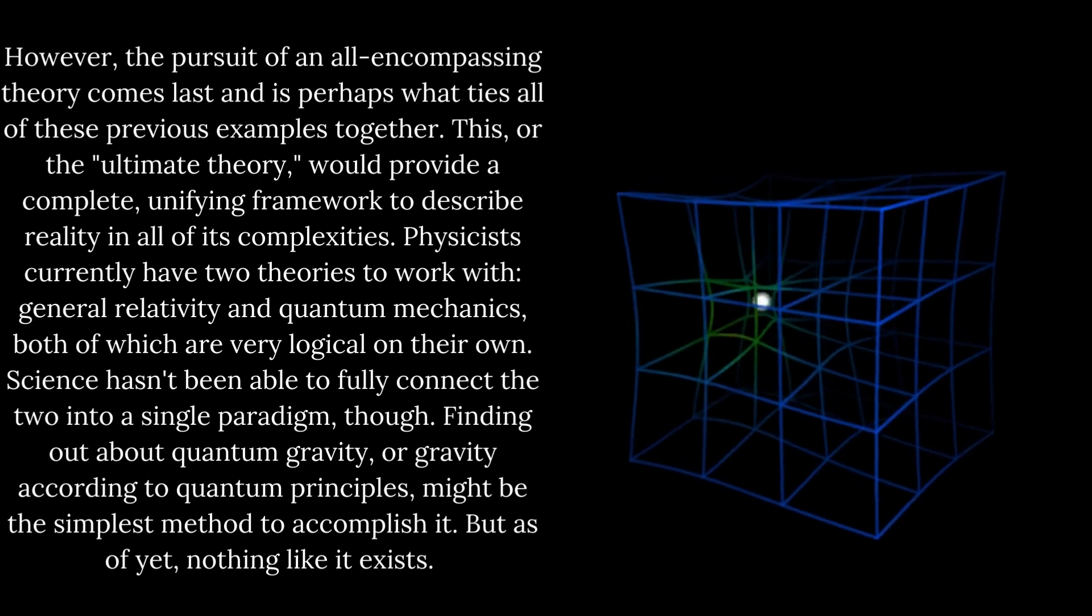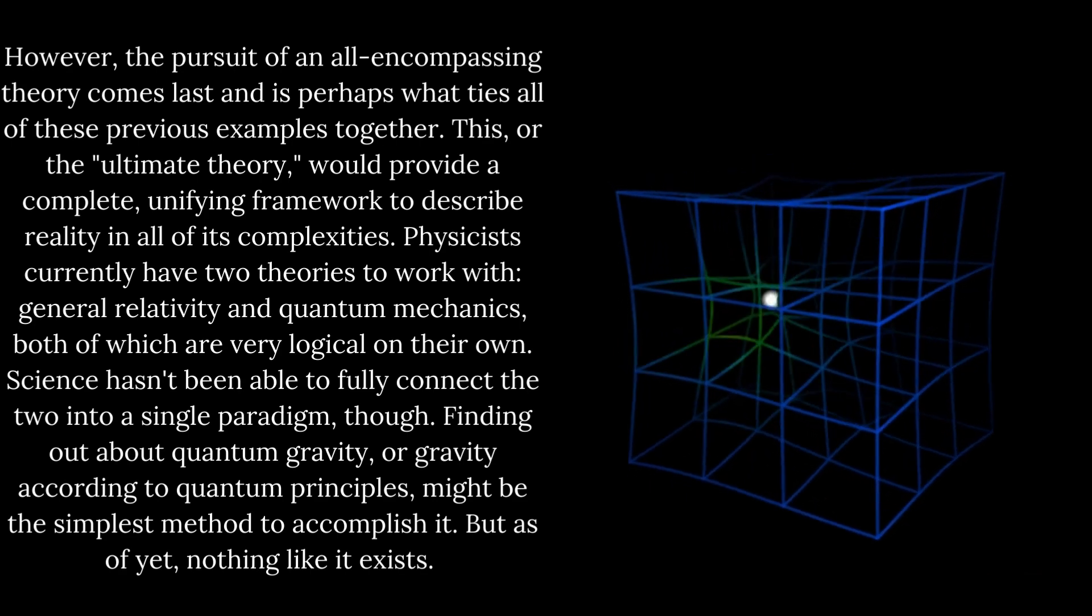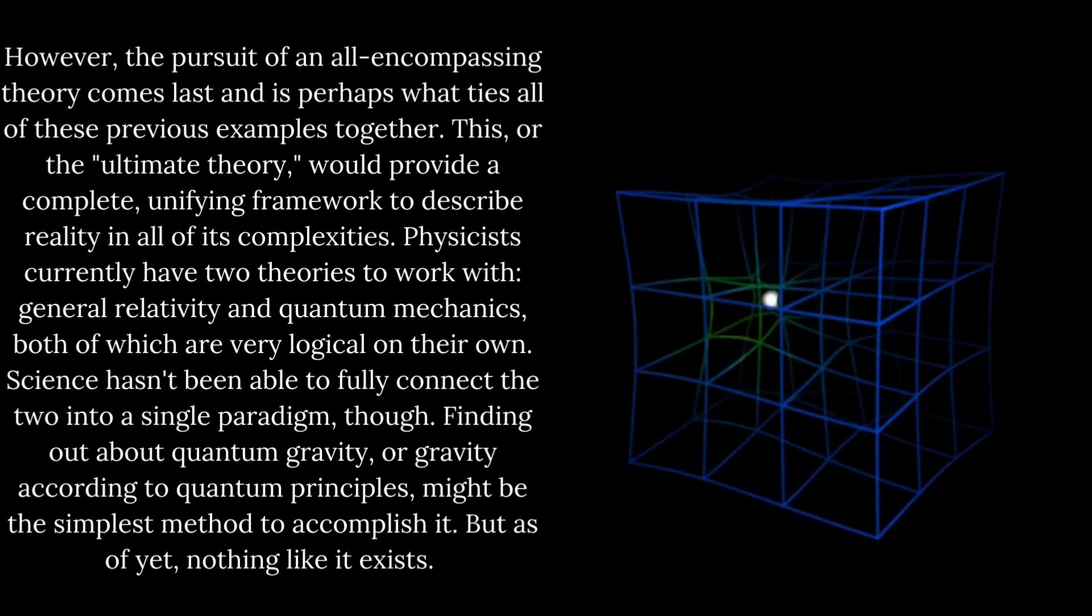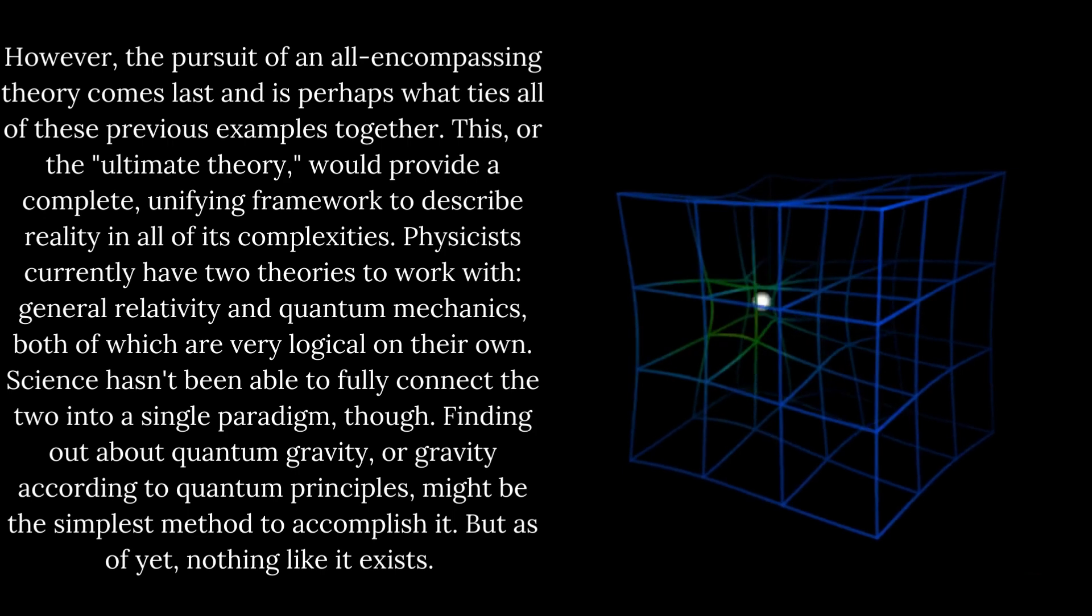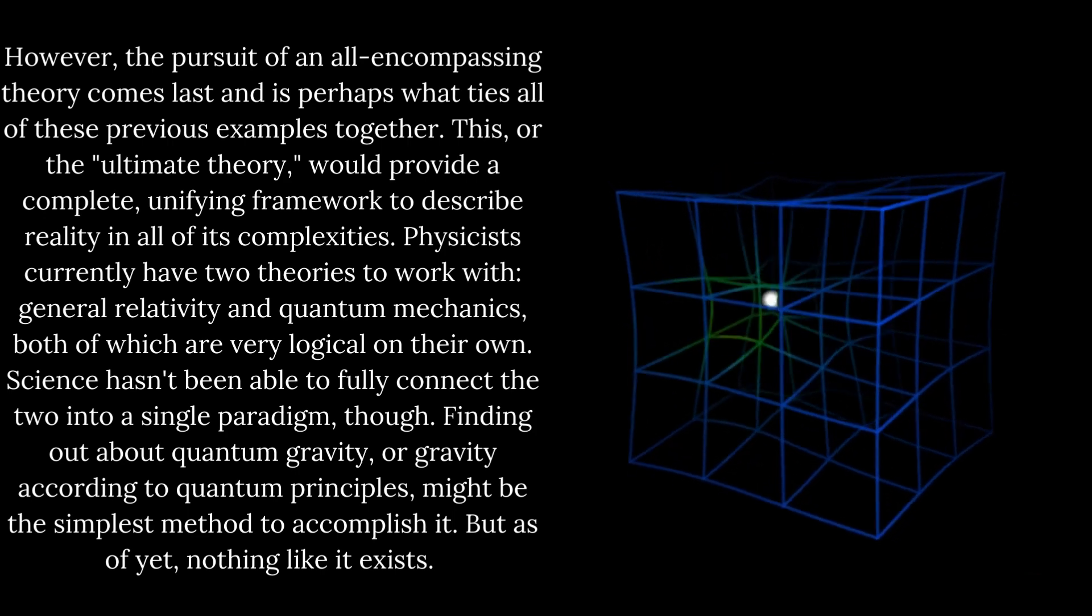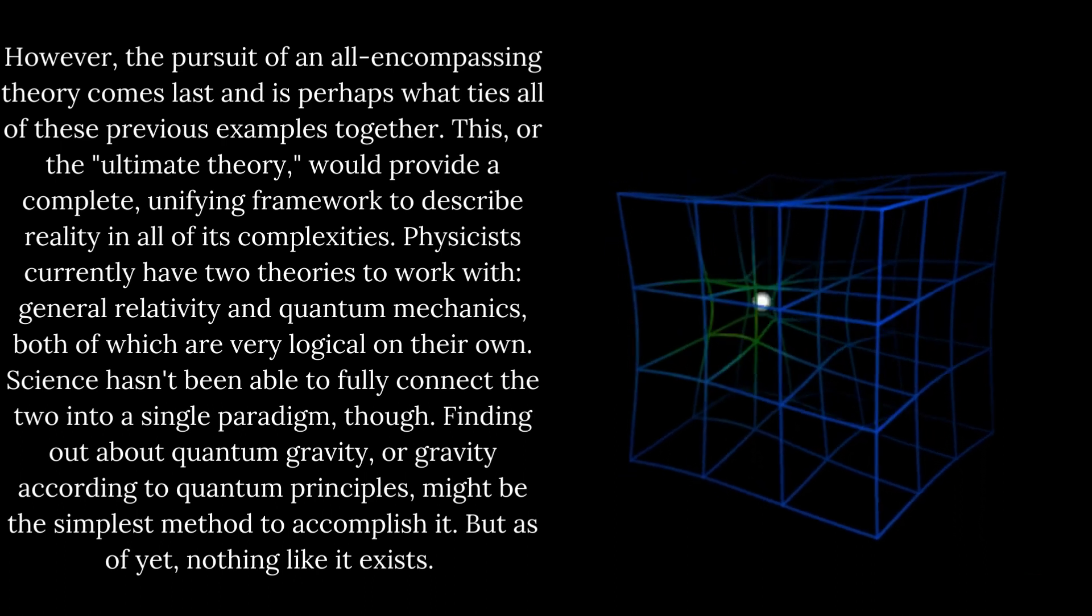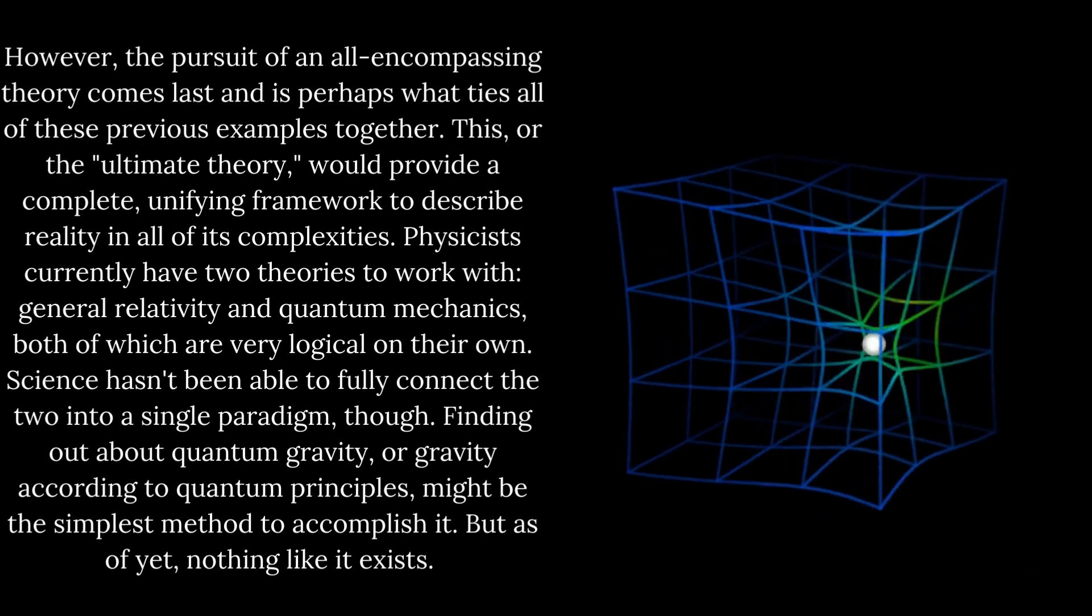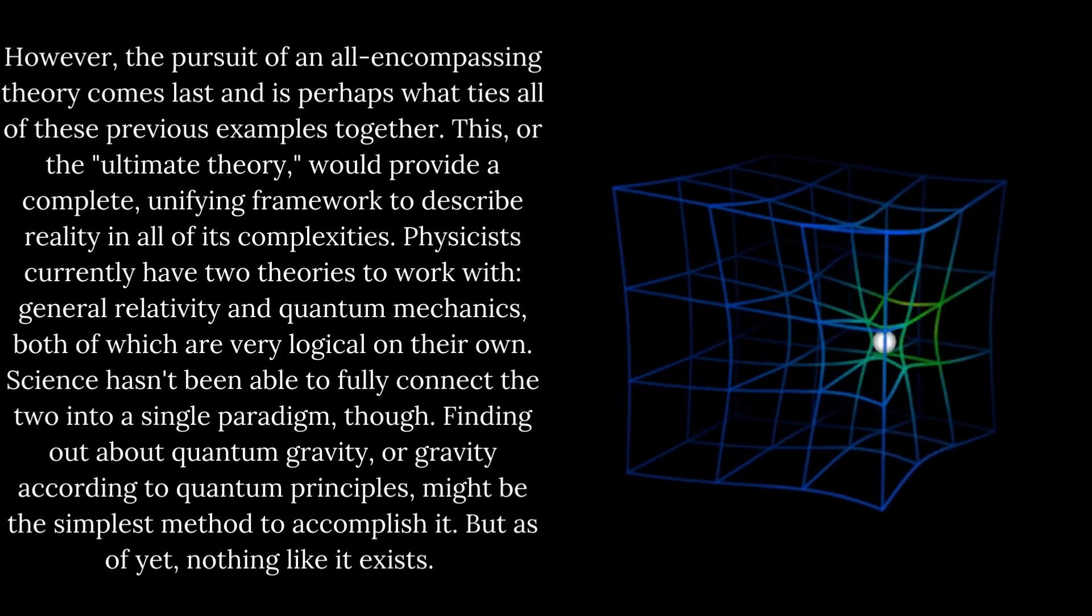However, the pursuit of an all-encompassing theory comes last and is perhaps what ties all of these previous examples together. This, or the ultimate theory, would provide a complete, unifying framework to describe reality in all of its complexities. Physicists currently have two theories to work with, general relativity and quantum mechanics, both of which are very logical on their own. Science hasn't been able to fully connect the two into a single paradigm, though.